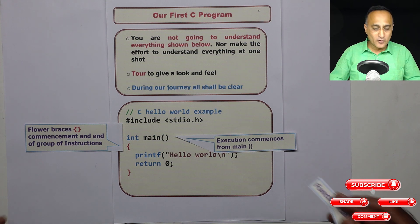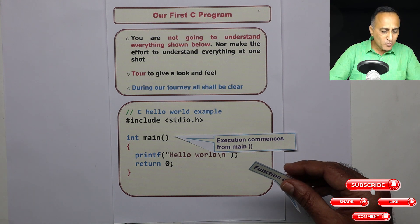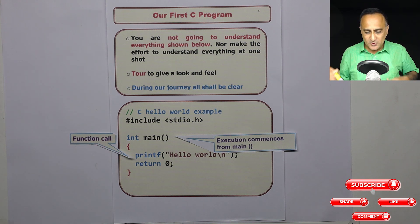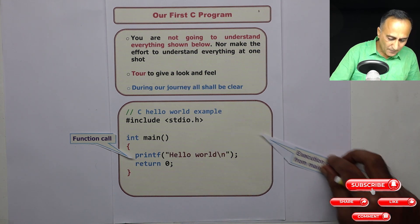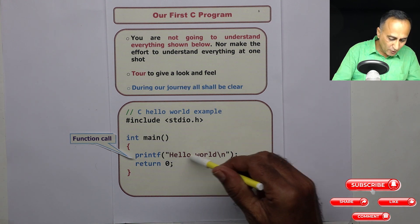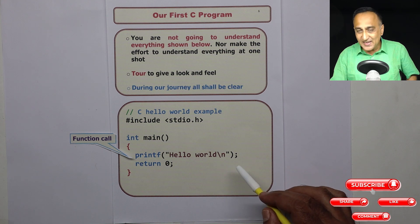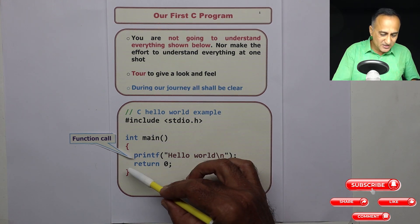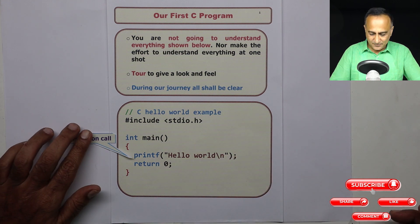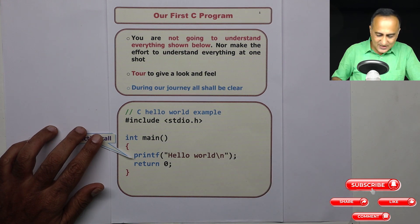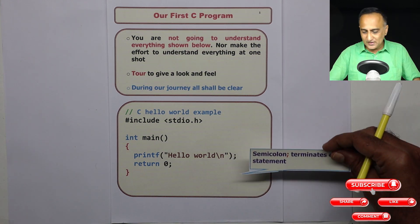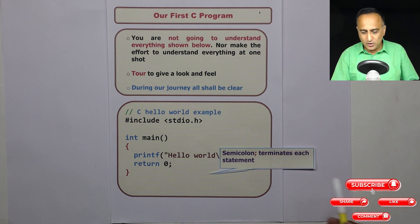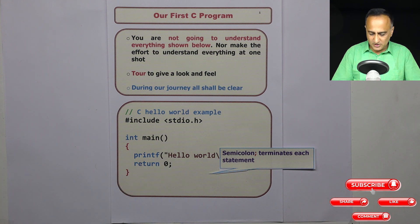Since I have not written the code for printf, what I am going to do is call printf to do the printing for me. Printf is nothing but a function call. What this function call will do is when I pass the message Hello World, it is going to take that Hello World and print it on the screen. The backslash n means after Hello World is printed on the screen, the cursor — the blinking thing — will go on to the next line. At the end of each line, there is a semicolon. C requires that the end of each statement be terminated with a semicolon, so printf is terminated with a semicolon and return zero is terminated with a semicolon.